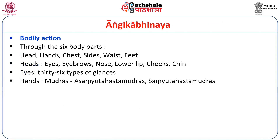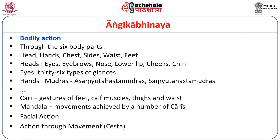These four are not independent but are interrelated. In fact, Natya Shastra is organized around these four. For example, let us take Angika Abhinaya. How many body parts are there? There are six: head, hands, chest, sides, waist and feet. Within the head, there are eyes, eyebrows, nose, lower lip, cheeks and chin. Within eyes alone, there are 36 types of glances listed. Hands have various mudras — Asamyuta hasta mudras, Samyuta hasta mudras, etc. Then there are Charis which are gestures of feet, calf muscles, etc. Mandala is movement achieved by a number of Charis. You list eyes as one Angika component and you list 36 glances — that is why it's called a manual of acting.